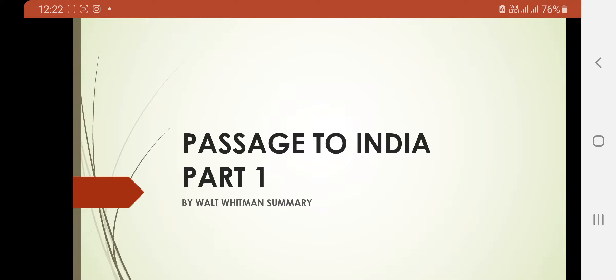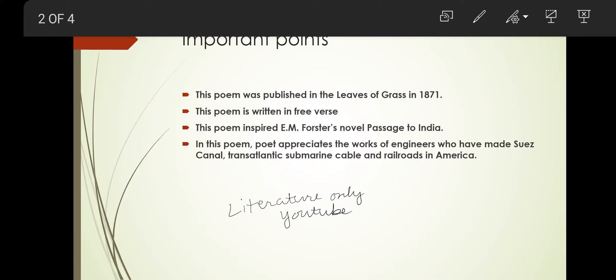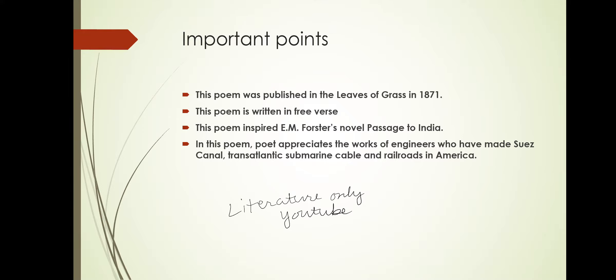This is the summary of the poem 'Passage to India' Part 1 by Walt Whitman. These are the important points about this poem. This poem was published in the book 'Leaves of Grass' written by Walt Whitman in 1871.